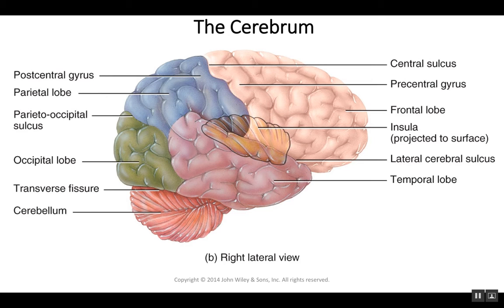This drawing is going to help us with the anatomy of the cerebrum. This is more of the surface anatomy. The surface anatomy will then help us identify some of those functional regions, divided into the sensory areas, the motor areas, and the association areas.